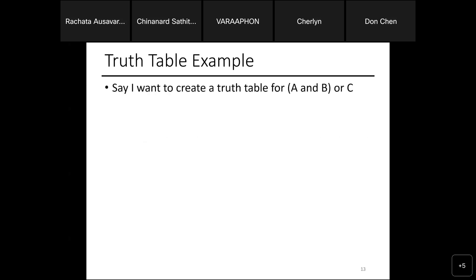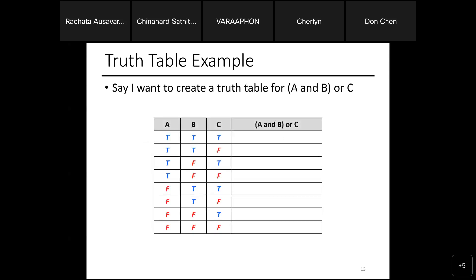To build a truth table for 'A AND B OR C': expand all possibilities — A true/false, B true/false for each — giving four rows. Then evaluate A AND B OR C for each combination. The truth table tells you whether the whole logic expression is true or false for every possible combination of inputs.